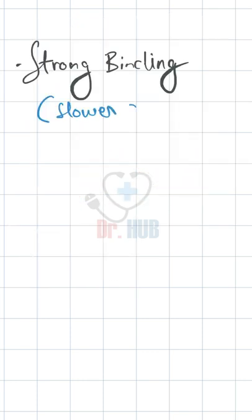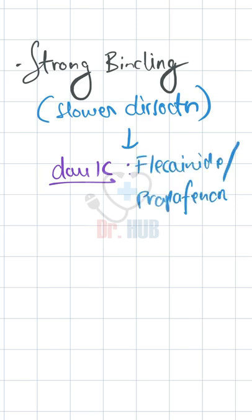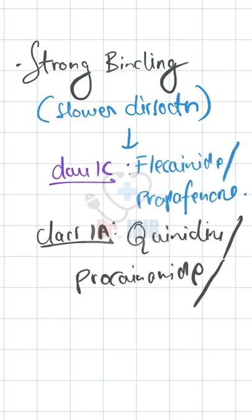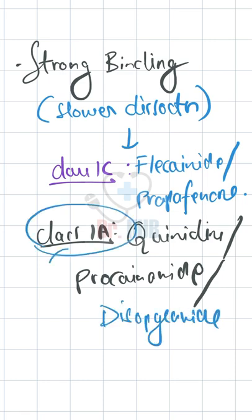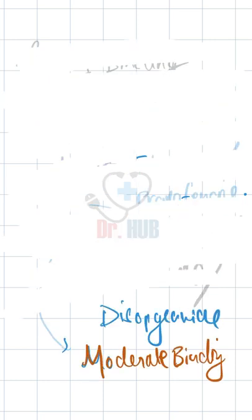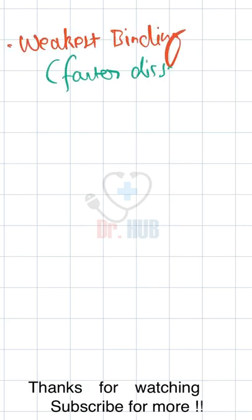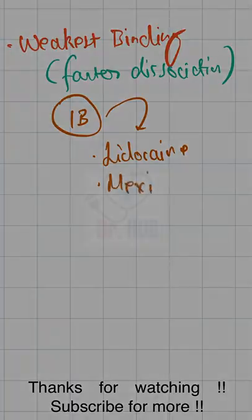Strong binding has the slowest dissociation — Class 1c includes flecainide and propafenone. Class 1a — quinidine, flecainide, and disopyramide — is moderate binding. Weakest binding includes faster dissociation: Class 1b — lidocaine and mexiletine.